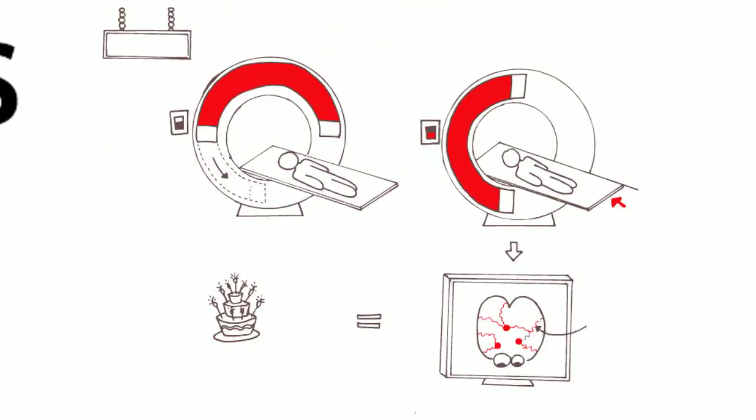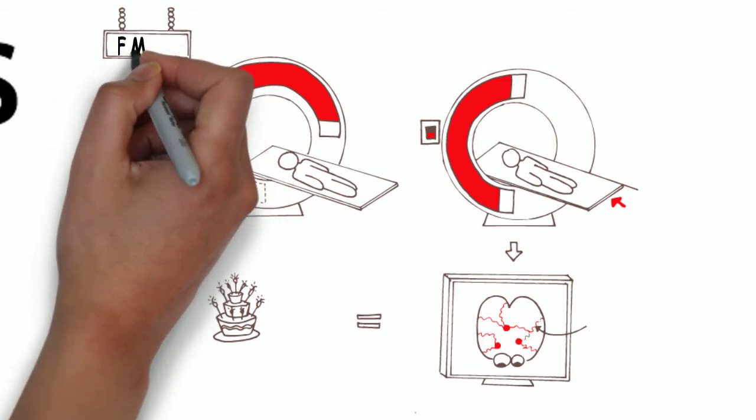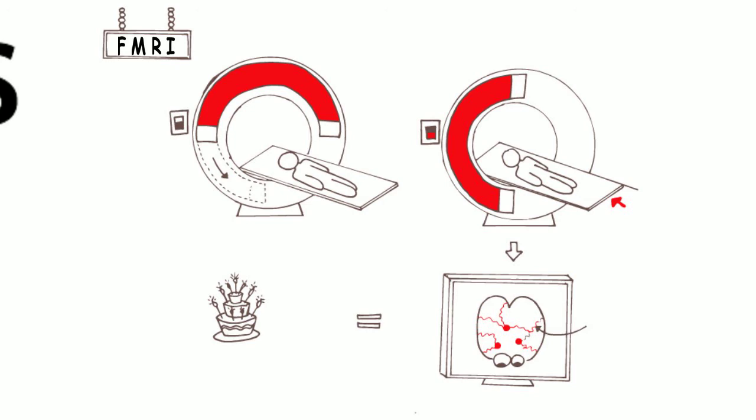To understand this, we have to go to functional magnetic resonance imaging, or FMRI studies. These studies use pictures to determine which part of the brain receives the most blood flow when we look at a palatable food.